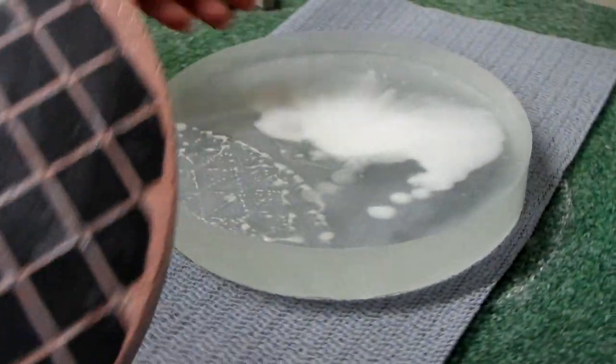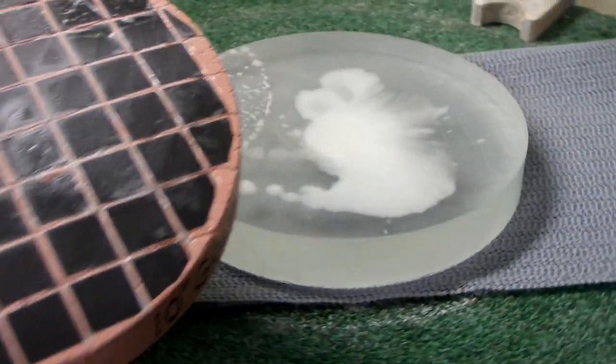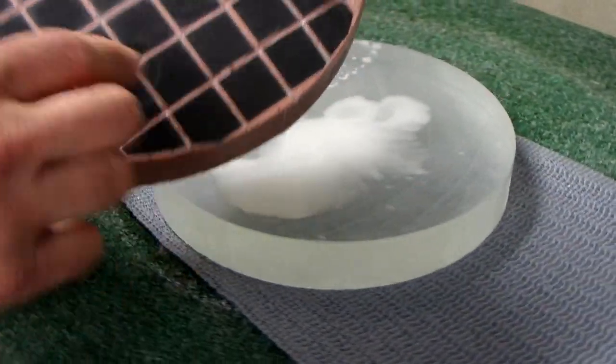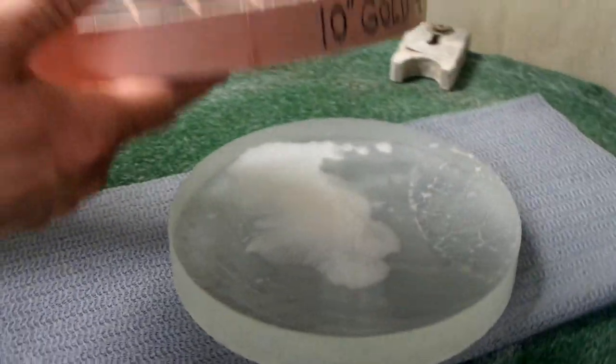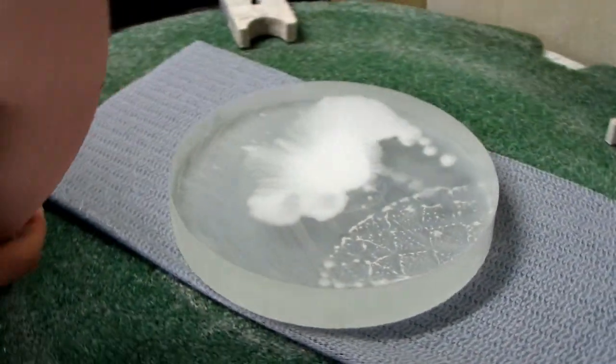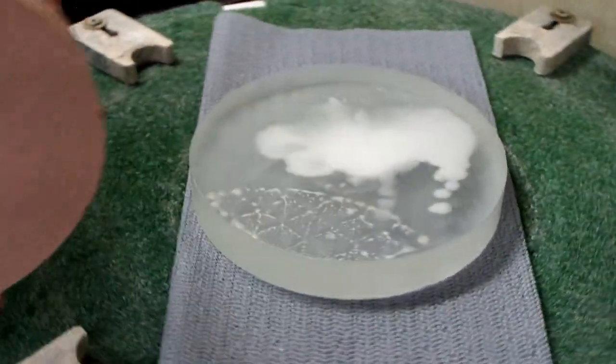I'm doing some grinding work on this 10 inch F2 primary mirror. I'm using a grinding tool that's made from ceramic tile and dental plaster. It's about an inch thick, inch and an eighth maybe. And right now I'm on 12 micron microgrid.